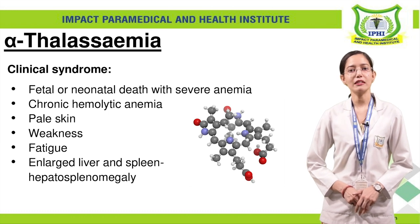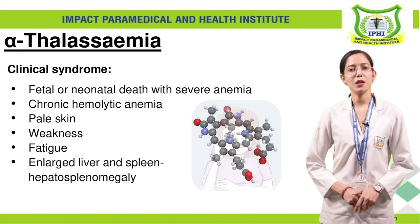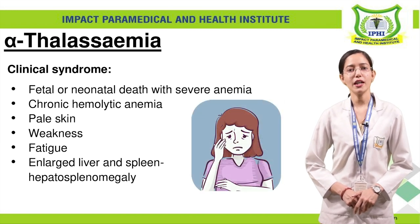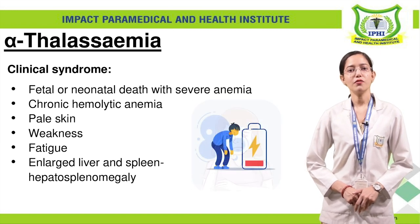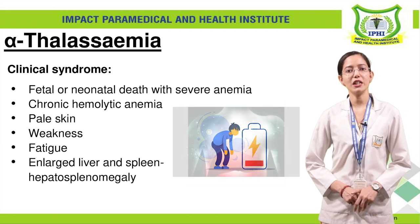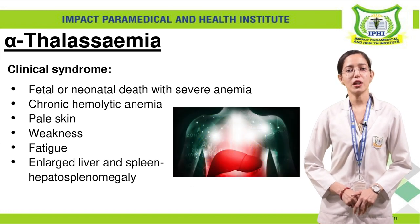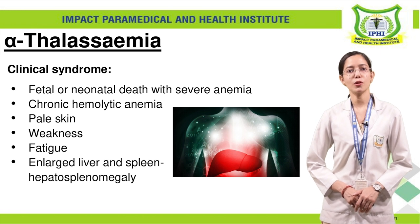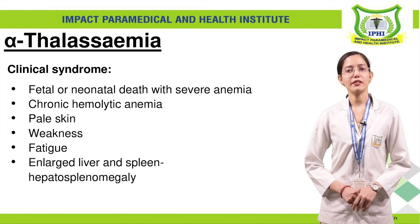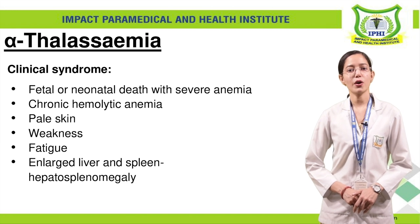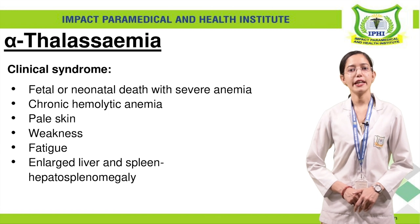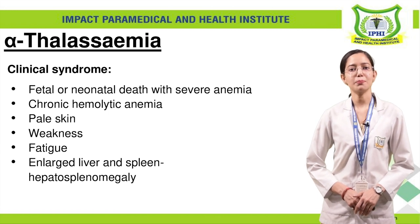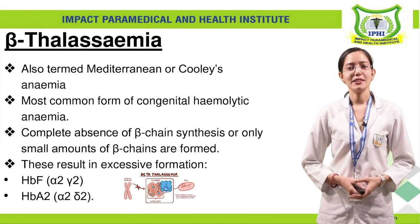Due to anemia, our body develops a pale colour, and the person becomes very tired and weak. The liver and the spleen will be enlarged. To summarize the clinical syndromes of alpha-thalassemia: fetal or neonatal severe anemia, chronic hemolytic anemia, pale skin, weakness, fatigue, and enlarged liver and spleen.